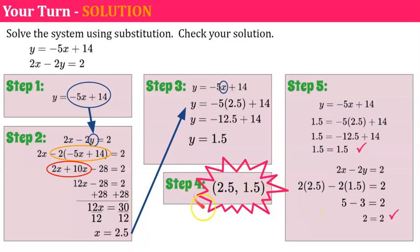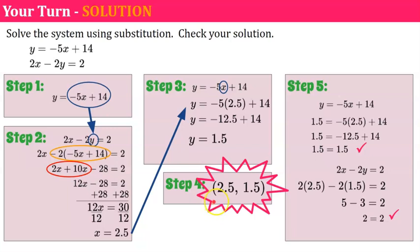Remember, your solution should be an ordered pair expressed in parentheses with coordinates separated by a comma. If you graphed these two lines, this is the point where they would intersect. This is why it's important to learn substitution besides graphing — it would be very hard to determine on a coordinate plane that the intersection was at 2.5, 1.5.